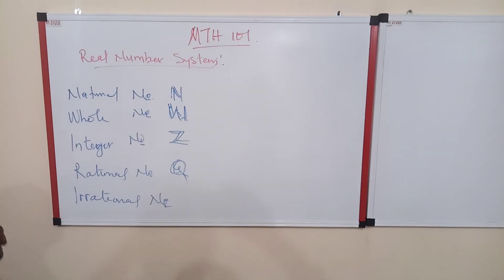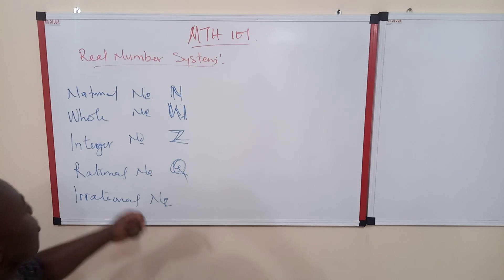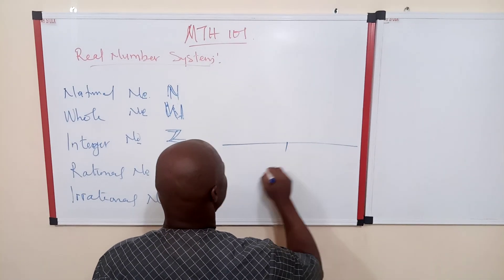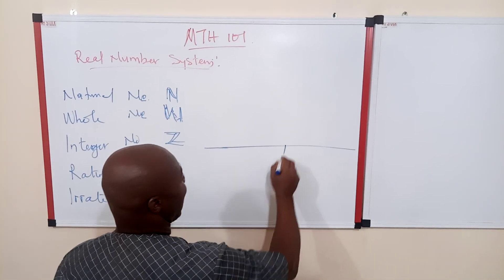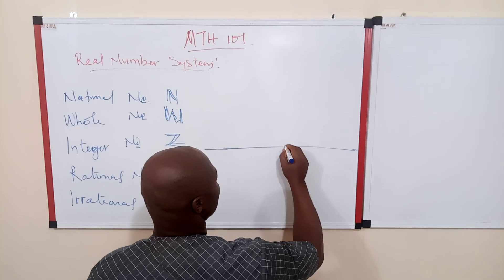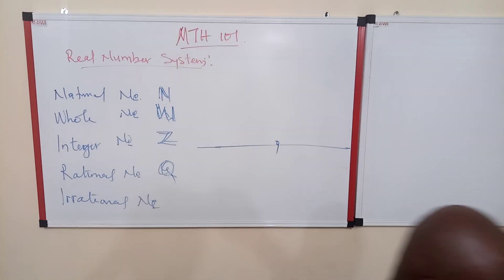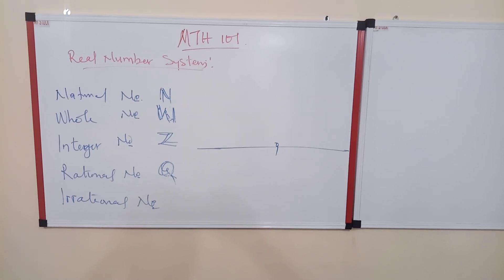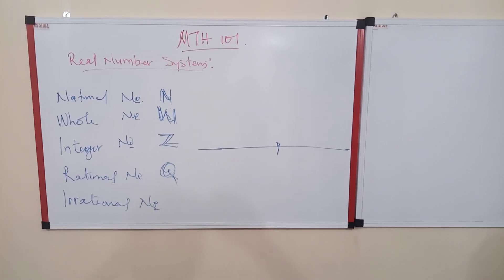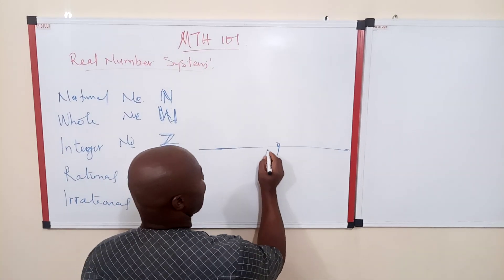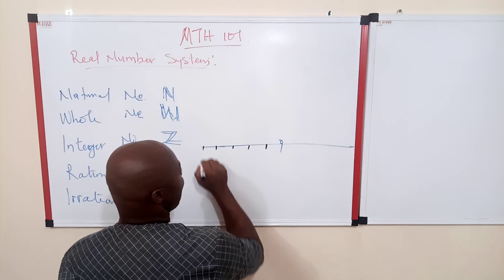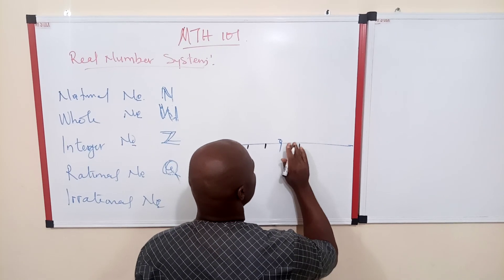Before we continue, I want to bring to our notice that sometimes when dealing with graphs we have a number line with an origin at zero. If you go to the left of the origin, all the numbers that way are negative.